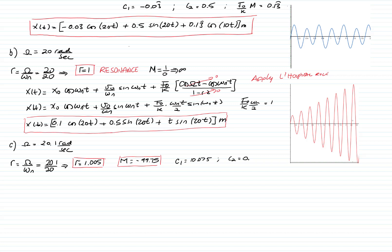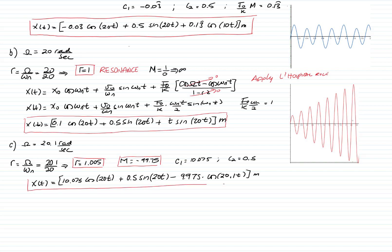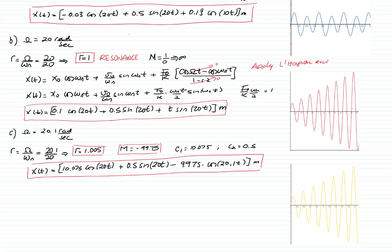Therefore, the response is: 10.075·cos(20t) + 0.5·sin(20t) + (F₀/k)·(−99.75)·cos(20.1t), where the particular amplitude (F₀/k × magnification factor) equals −9.975. Comparing this graph with the resonance case, they look very similar — it seems like the response is growing without bounds.